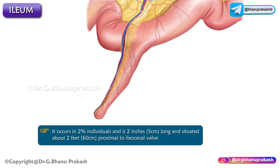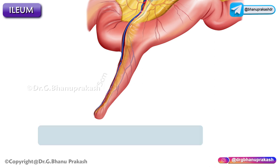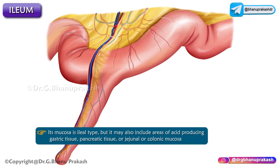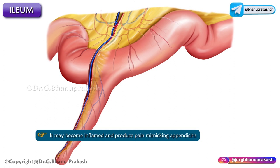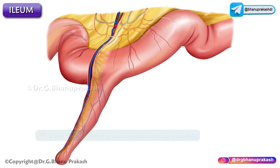Meckel's diverticulum follows the rule of 2s: it occurs in 2% of individuals, is 2 inches (5 centimeters) long, and is situated 2 feet (60 centimeters) proximal to the ileocecal valve. Its mucosa is ileal in type, but may also include areas of acid-producing gastric tissue, pancreatic tissue, or jejunal or colonic mucosa. It may become inflamed and produce pain mimicking that of appendicitis.